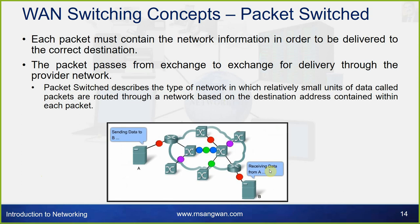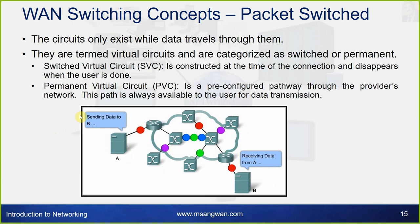Each packet must contain network information in order to be delivered to the correct destination. The packet passes from exchange to exchange for delivery through the provider network. Packet switching describes a type of network in which relatively small units of data called packets are routed through a network based on the destination address. The circuits only exist while data travels through them; they are termed virtual circuits, and are categorized as switched or permanent.